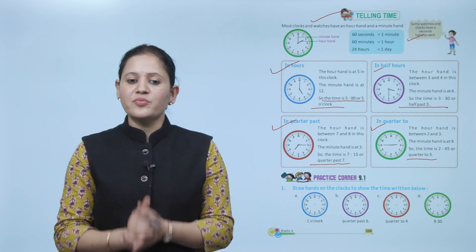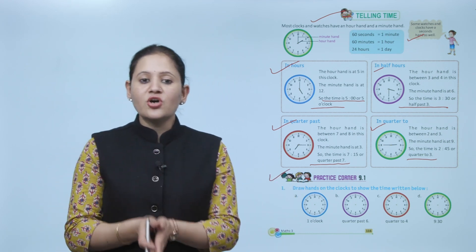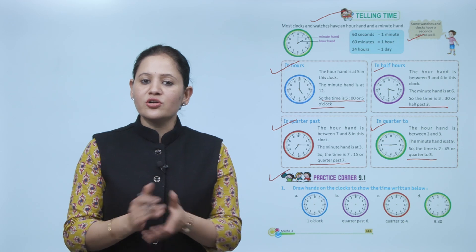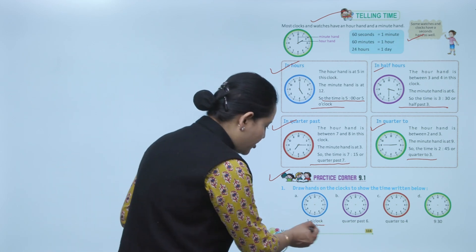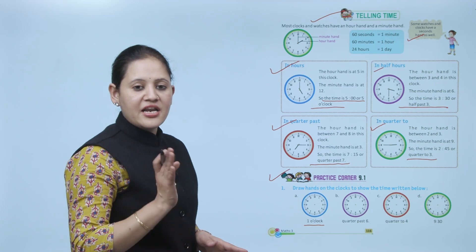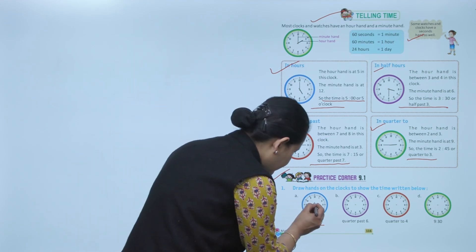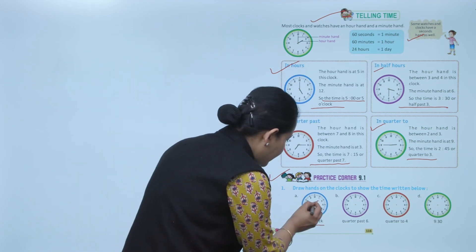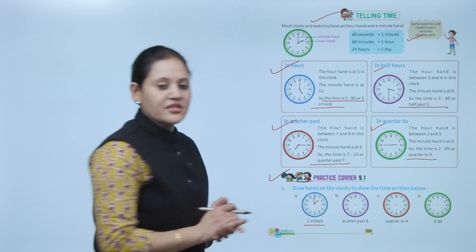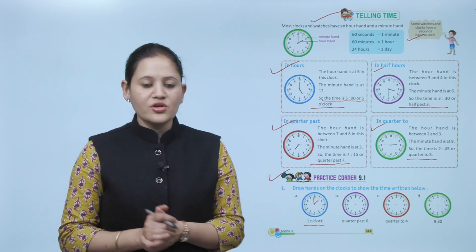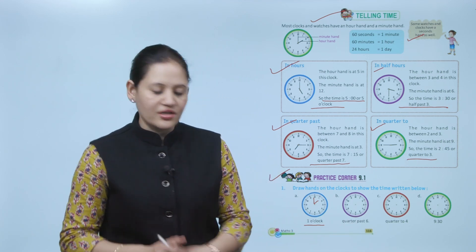Next, Practice Corner 9.1. Draw hands on the clock to show the time written below. Here the time is 1 o'clock, so the hour hand should be on 1 and the minute hand should be on 12. According to the given time, you have to draw the hands on the clock.